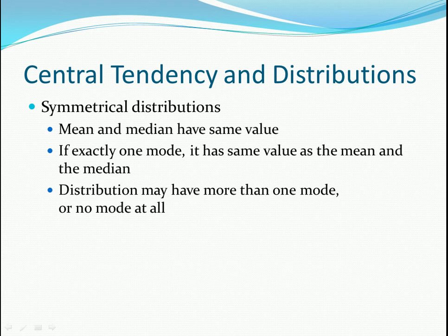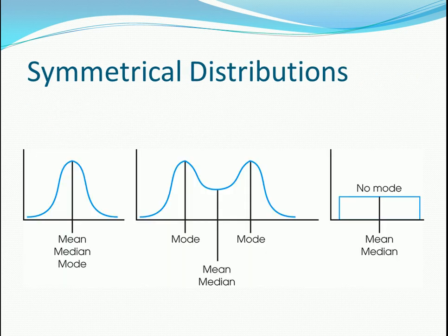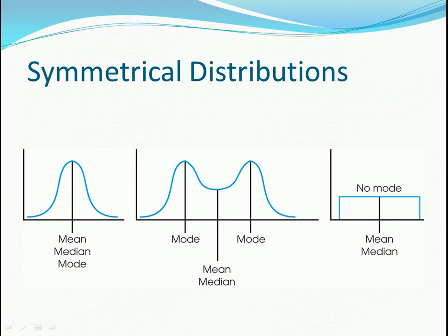Central tendency and distributions can get tricky. For symmetrical distributions — meaning they're the same on each side — the mean and median have the same value. If there is only one mode, it has the same value as the mean and the median, but the distribution may or may not have a mode. On the first graph, mean, median, and mode are all in the very center. For a bimodal distribution, mode is always at the highest peak because it occurs the most often. In a symmetrical distribution, your mean and median are in the very middle.